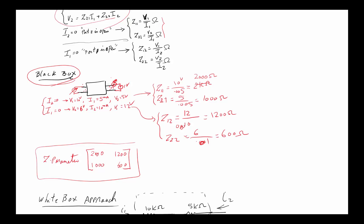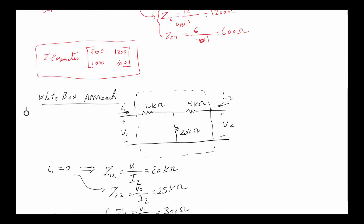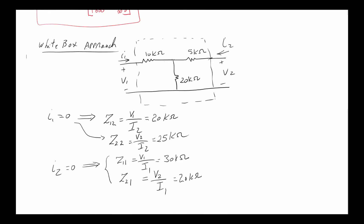If measurement data doesn't come with I1 = 0 or I2 = 0, you plug the values back into the original system of two equations and solve for the Z parameters. White box is where we see the circuit directly and apply open-circuit conditions analytically. This concludes the overview of the Z or impedance parameter two-port network model, covering both the black box and white box approaches.